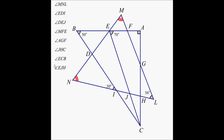What we are supposed to do is find the measures of these angles — angle MNL, angle EDI, angle DEJ, and so on. We are going to start with the first one and see where we can go, label the angles, write them down, and once we find an angle we are going to put a little check mark.